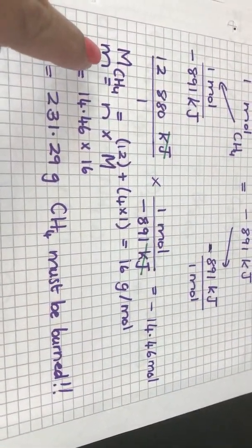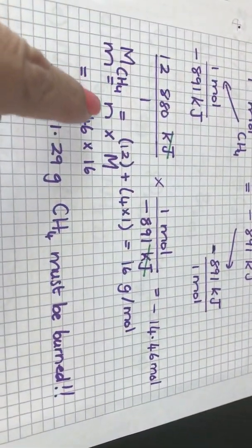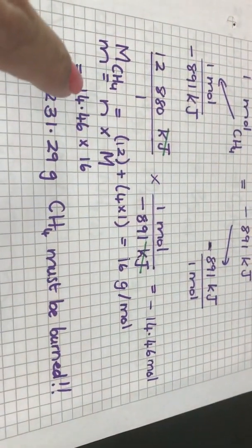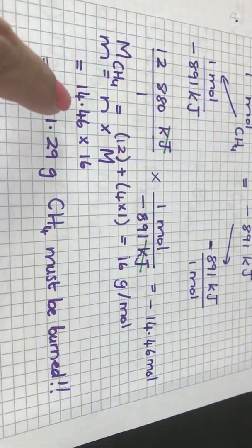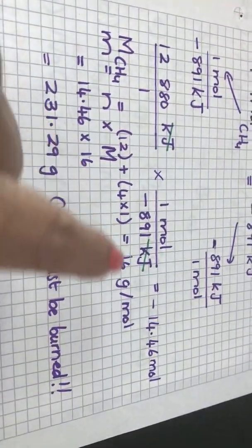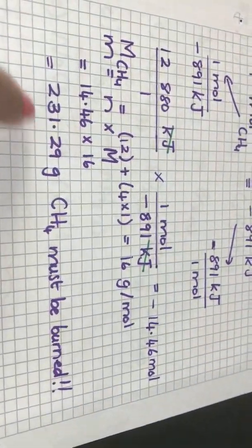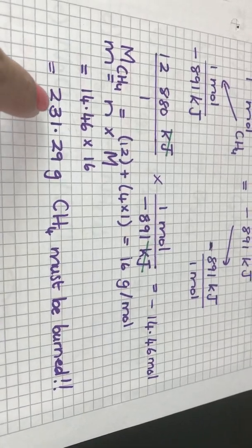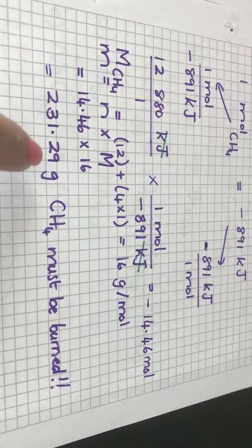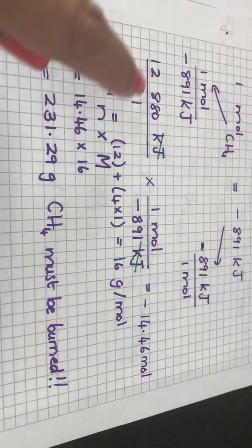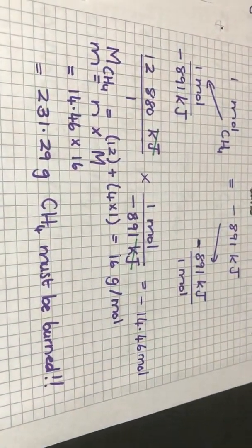So I take my formula to calculate my mass, I take my number of moles and I multiply it by my molar mass. So I have 14.46 mole and my molar mass is 16. If I multiply that out I see that I will need 231.29 grams of methane in order to produce this amount of energy.